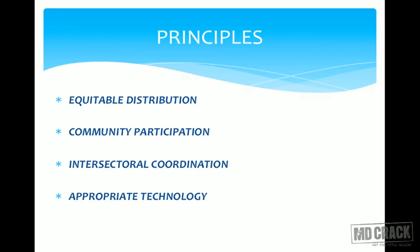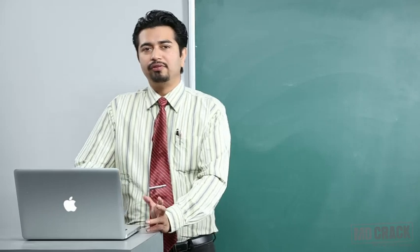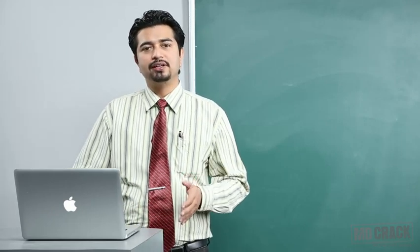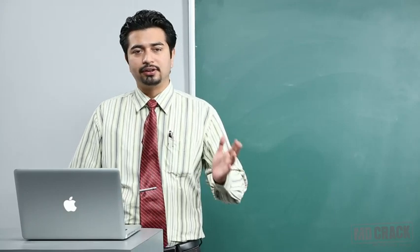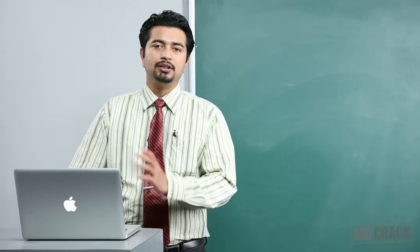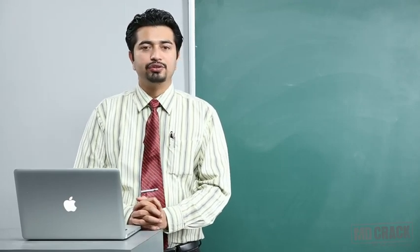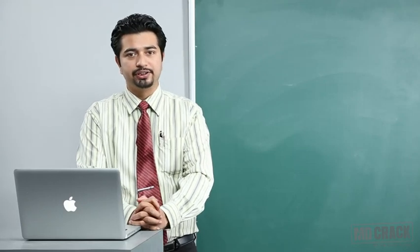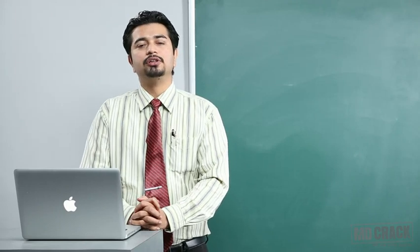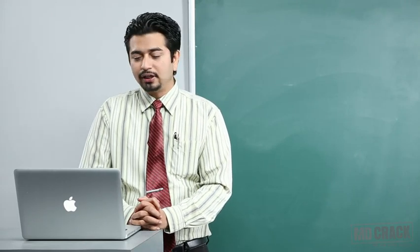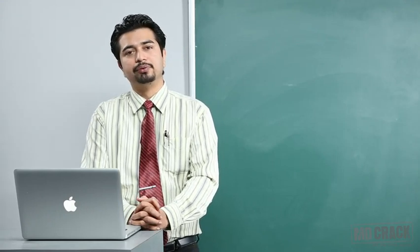The principles of primary health care are: equitable distribution, community participation, intersectoral coordination, and appropriate technology. These are the four pillars of primary health care. Regarding equitable distribution: health service is a basic human right. There is a glaring disparity between the health status of developing and developed worlds. We want everybody to have uniform access to health facilities in each country — for example, in India, the rich and poor should both have equal access to government health facilities. That is the essence of equitable distribution.